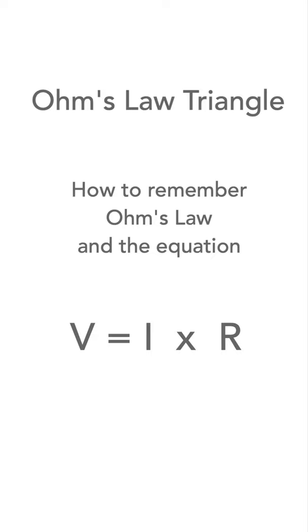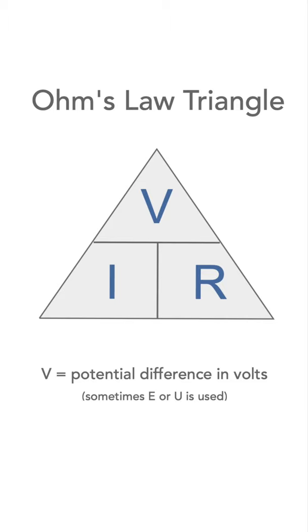One easy way of remembering Ohm's law is to use what's called the Ohm's law triangle. It simply consists of a triangle with potential difference or voltage V at the top and the current I and resistance R in either of the bottom corners.